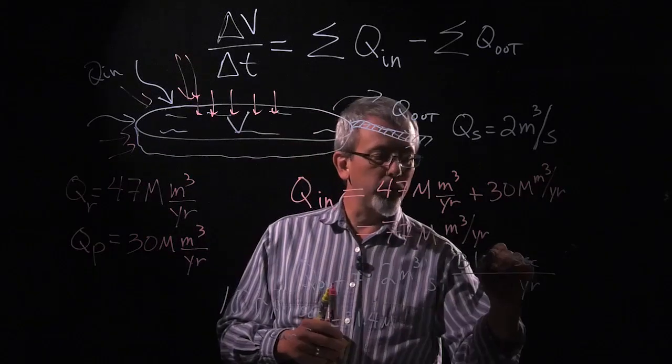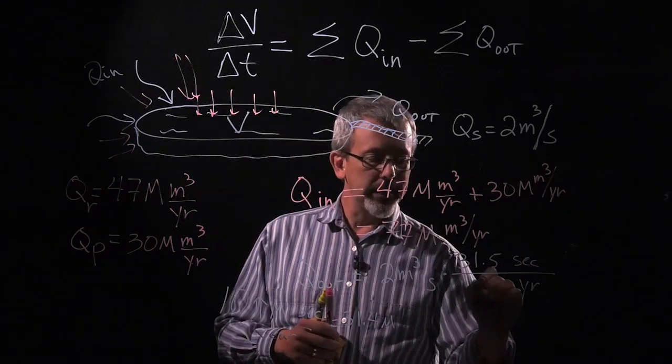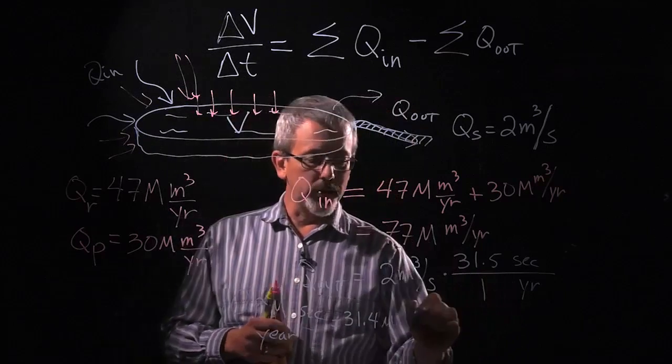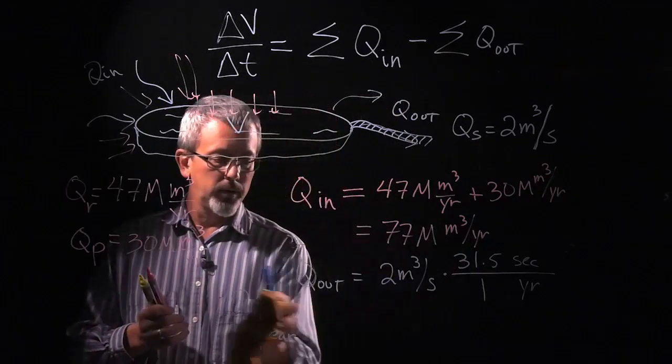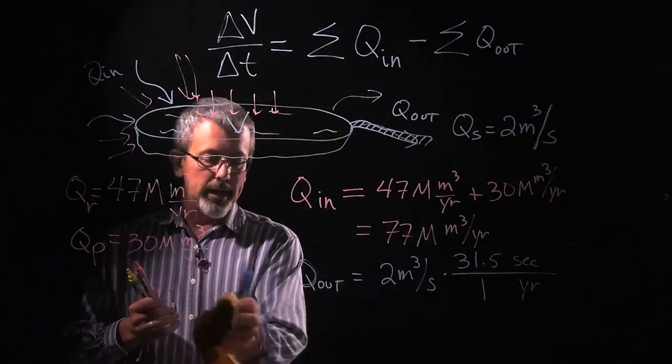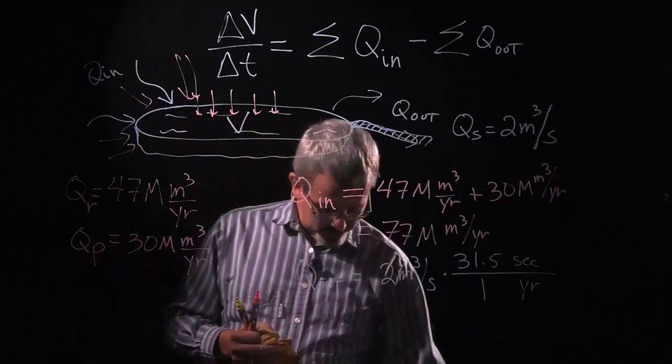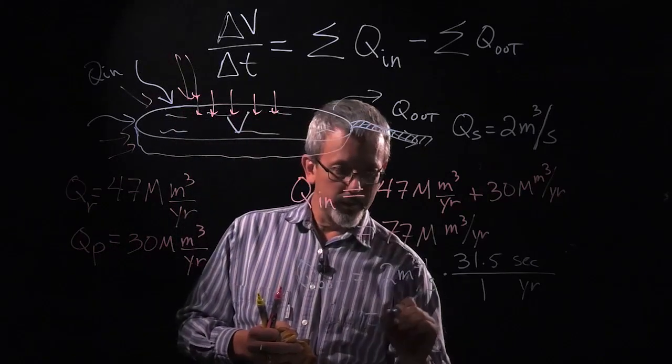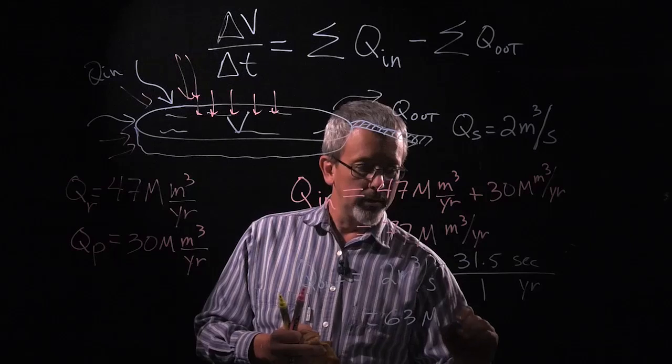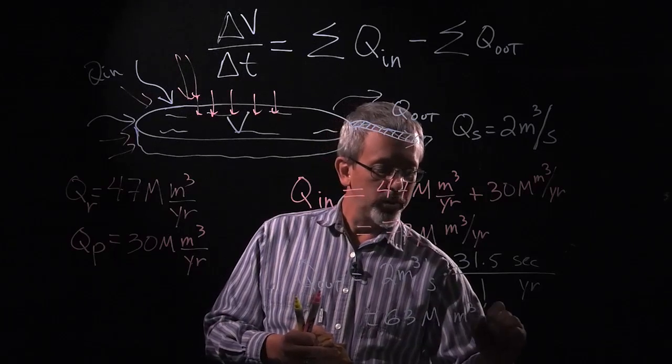Actually, 31.5 million, so 31.5 million here, seconds in one year. If I multiply that out, I get an outflow of about 63 million meters cubed per year.